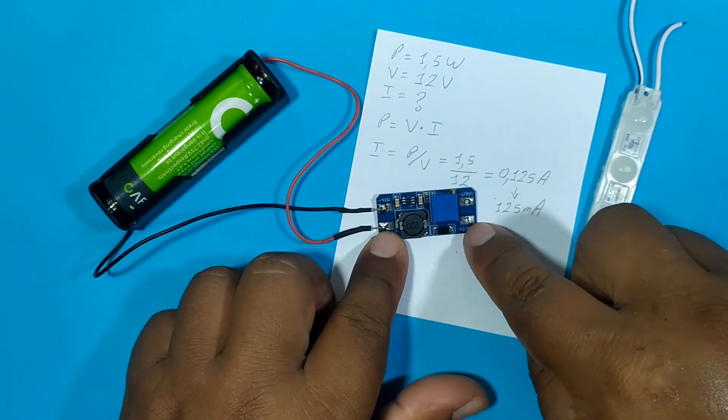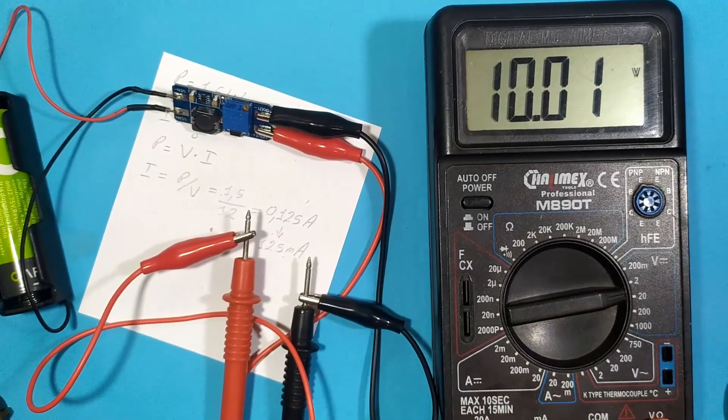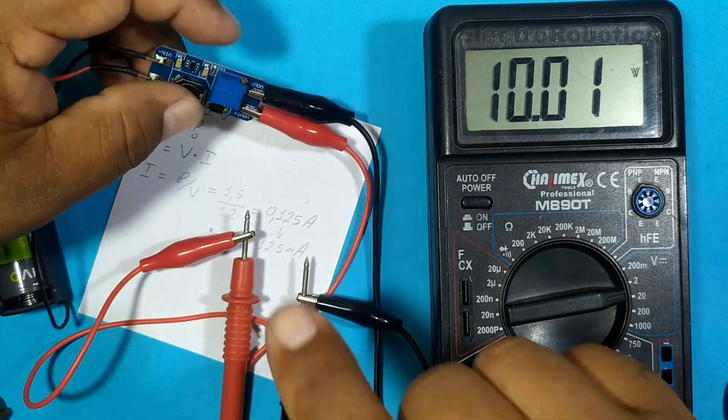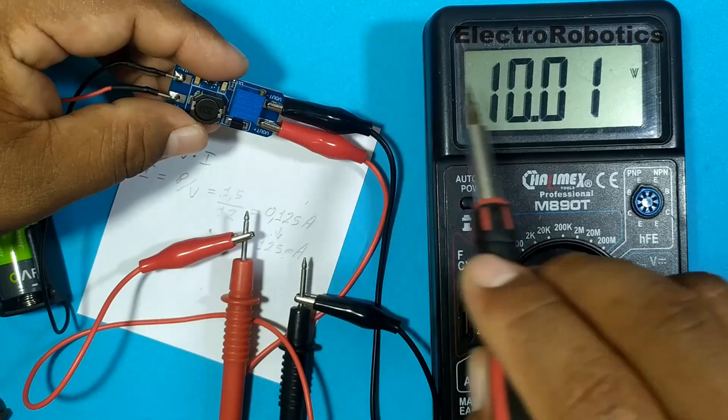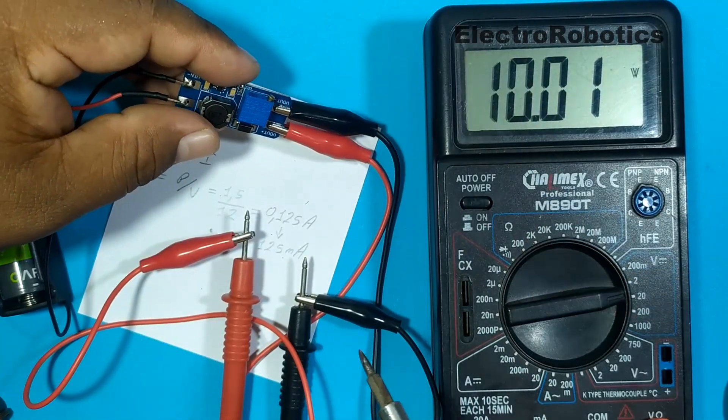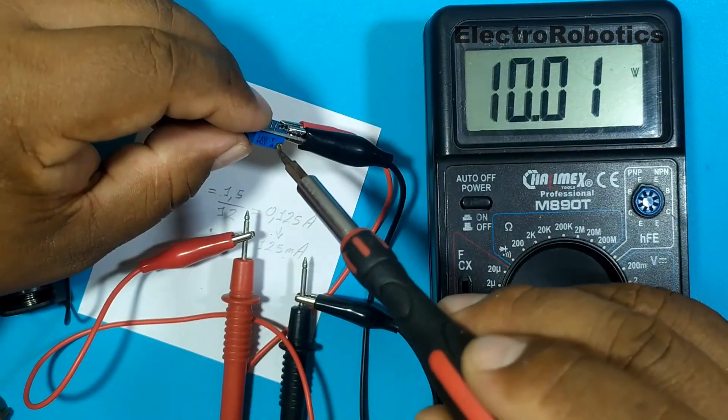And we are going to test here and see how many volts the module gives us. Well guys, we already have our module connected to the multimeter. We have 10 volts as voltage output. Now what we have to do is turn the screw until we get the 12 volts we need.